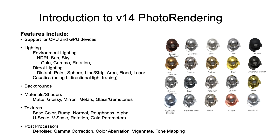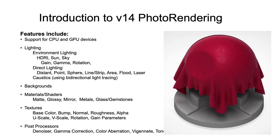Additionally, lighting has been updated. We support HDRI, sun, and sky with options to control gain, gamma, and rotation. Direct lighting includes distant, point, sphere, area, and a new laser light for discrete based lighting. We now support caustics — if you have special effects due to lighting, you can enable bi-directional light tracing for improved caustics.